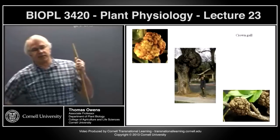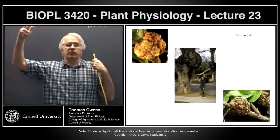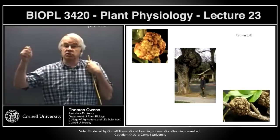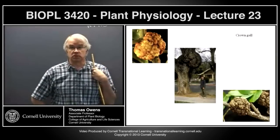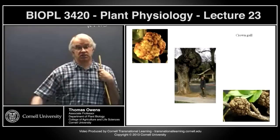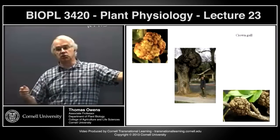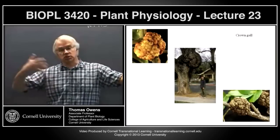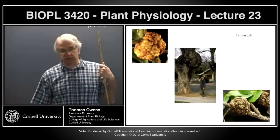If you take plant tissues and try to grow them in culture — snip a leaf off and give it sucrose and mineral nutrients — it doesn't grow. Take the shoot apical meristem, cells that are normally dividing — put it in culture, and it doesn't grow either. But if you take the root apical meristem and put it in culture, those cells will grow indefinitely. So there's something fundamentally different between shoot and root apical meristems in terms of controlling cell division.